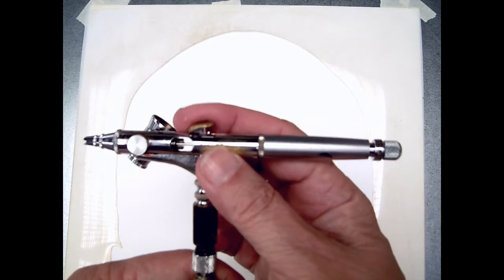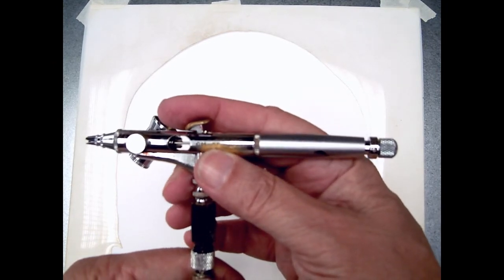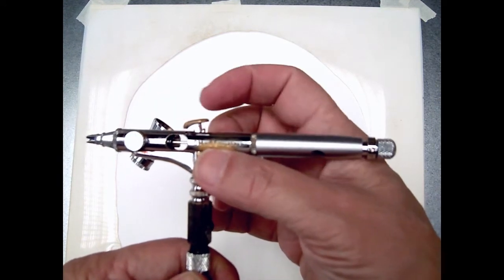The soft spring requires less pressure to operate the trigger, which makes for less effort and more control. The shorter trigger provides a shorter throw, which allows me to use my fingertip rather than my whole finger to control the spray.